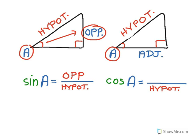That ratio of those side lengths represents the sine ratio for a given angle. And the cosine ratio is the ratio of the side adjacent to a given angle over the hypotenuse within a right triangle. Just like the tangent ratio, these ratios can be used to solve for missing side lengths when you know angle measures, or to find angle measures when you know side lengths of right triangles.